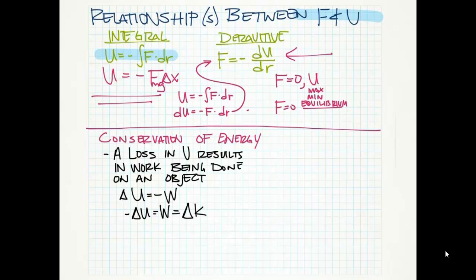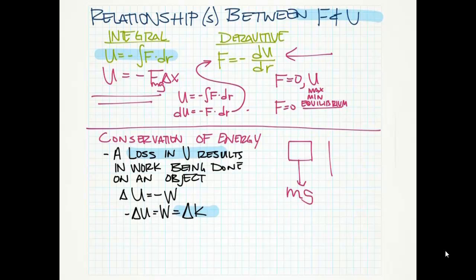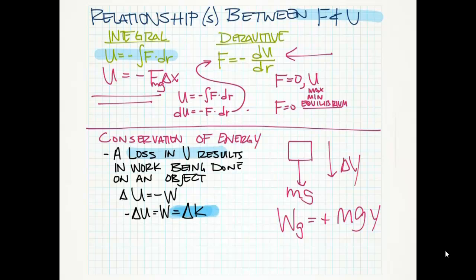This brings us back to the conservation of energy. Anytime we lose potential energy, we're going to gain kinetic energy. Losing potential energy means that work is done on an object. In the case of gravity, here's my box, here's weight — if we fall a distance of delta y, the work done by gravity is positive mgy. Positive work means we're going to have a gain in kinetic energy, which means velocity goes up. Any loss in potential energy is equal to one-half mv squared. This lets us quantify that loss in terms of the velocity that we gain.